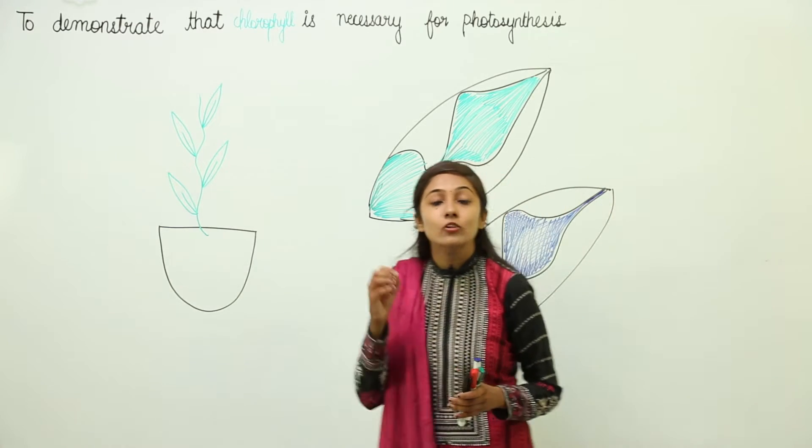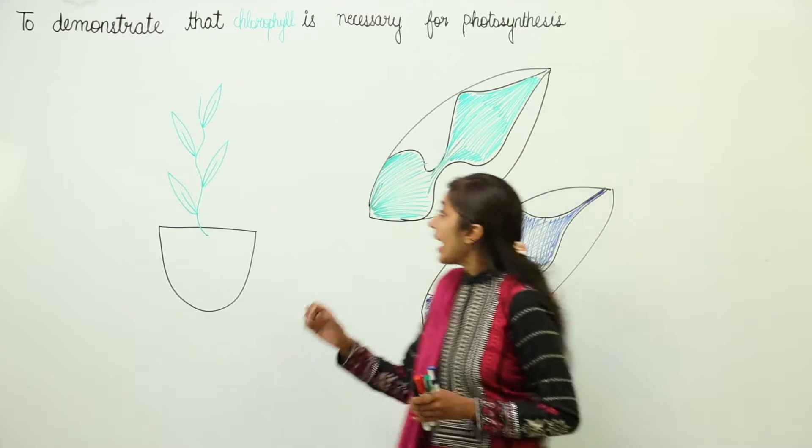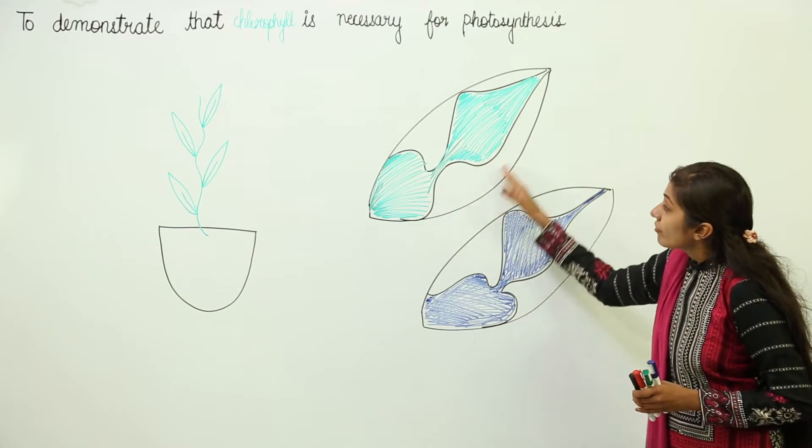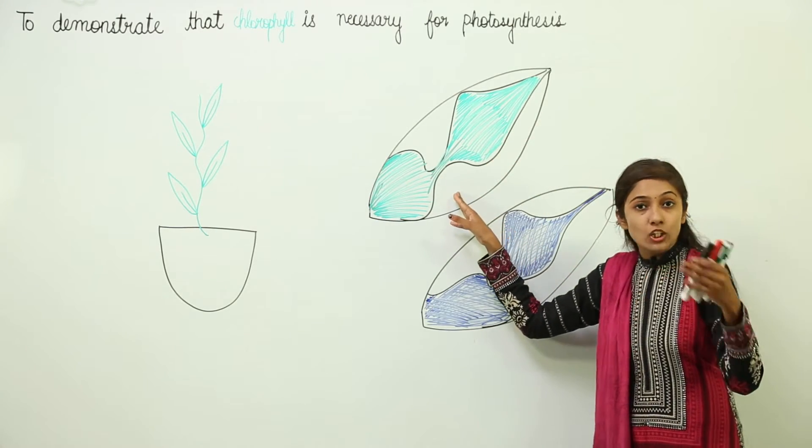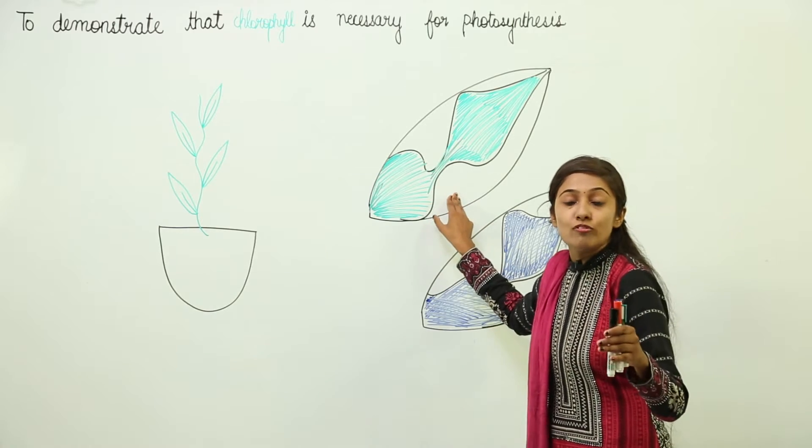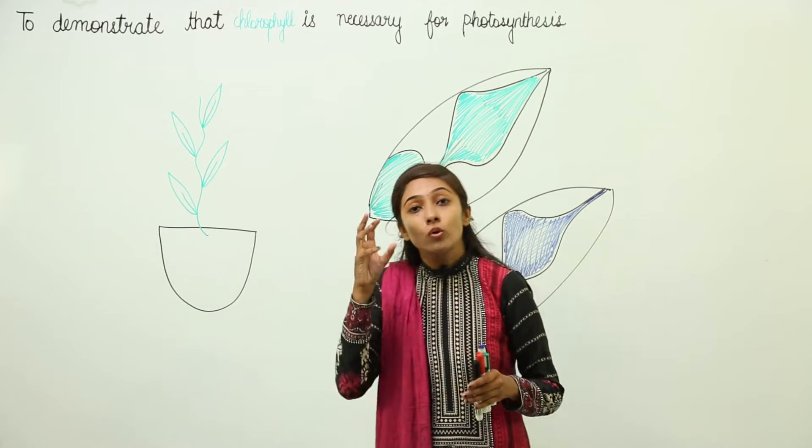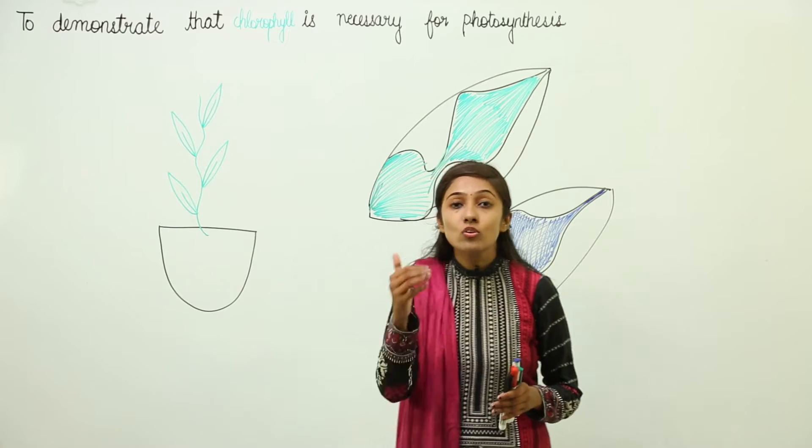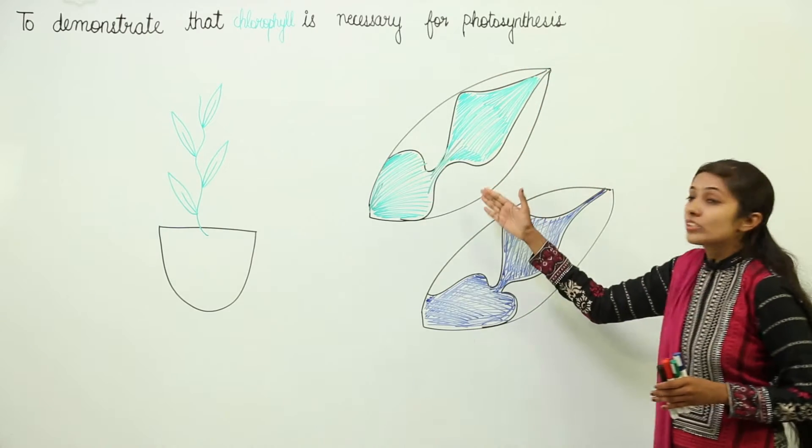Green areas contain chlorophyll and yellow ones do not contain chlorophyll. We are going to prove that only in regions where chlorophyll is present, photosynthesis takes place.